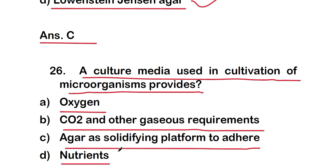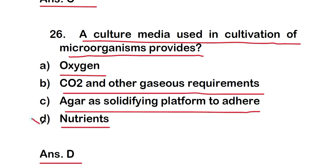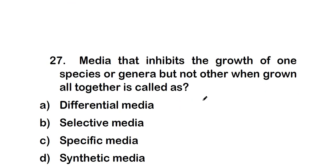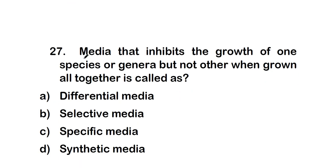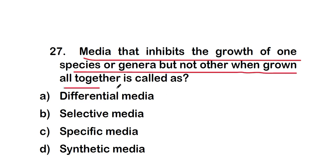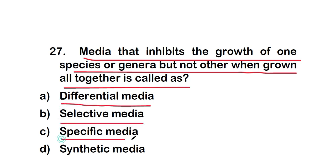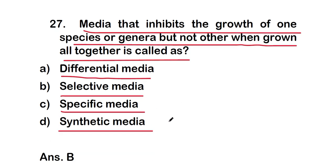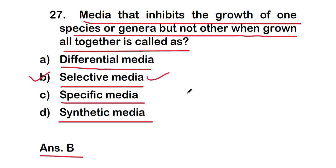A culture media used in cultivation of microorganisms provides nutrients. Question 27: media that inhibits the growth of one species or genera but not others when grown together is called — option B — selective media. Selective media inhibits the growth of one species or genera but allows others to grow when cultured together.